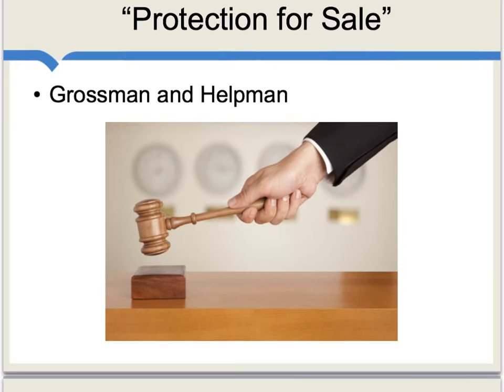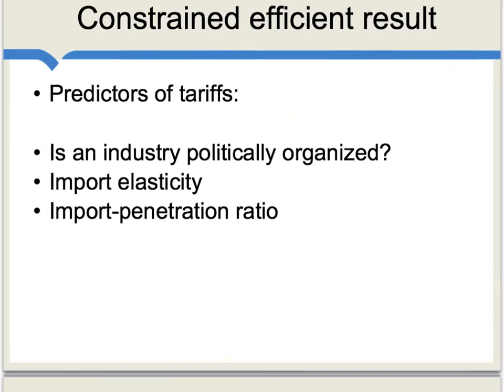The most important formal model of trade protection comes from a famous piece from the 1990s called 'Protection for Sale,' written by Grossman and Helpman. They model politics as a kind of auction process through which different interest groups bid for tariffs. It might be most efficient to have no tariffs at all, but given that some tariffs will exist, groups in essence put in different bids into the political process, and we end up with a system of relatively efficient — or constrained efficient — tariffs.